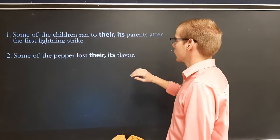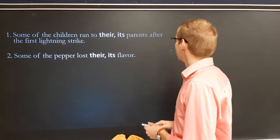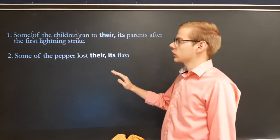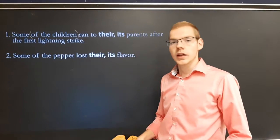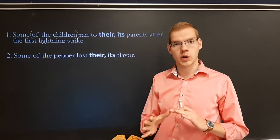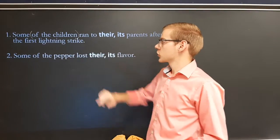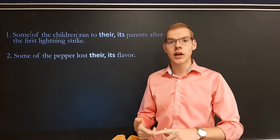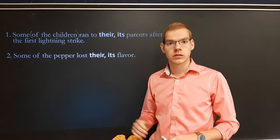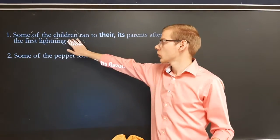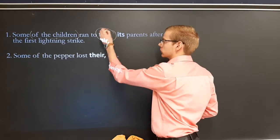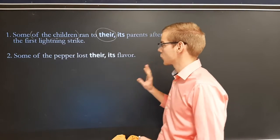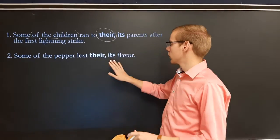Some of the children ran to their or its parents after the first lightning strike. We put parentheses around the prepositional phrase. Since 'some' is one of the indefinite pronouns — some, any, none, almost — we have to look at the last word in the prepositional phrase: 'children.' Is that plural or singular? If it is singular, we need a singular pronoun. Children is plural, so we need a plural pronoun. We put parentheses around the prepositional phrase, see if it's plural or singular, then circle the right one accordingly.